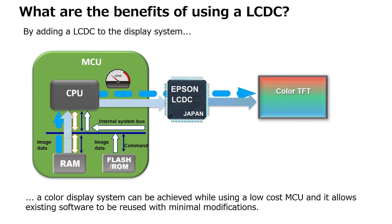When an LCD controller is added to a display system, most of the display image processing will be done by the LCD controller, reducing the image processing load of the MCU. This allows a color display system to be implemented using the current MCU.